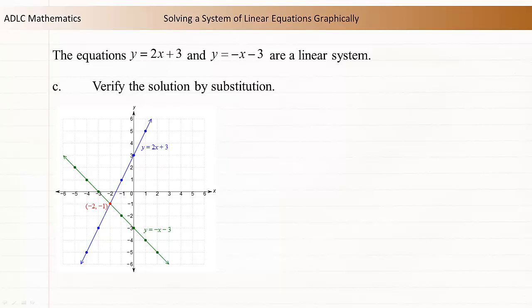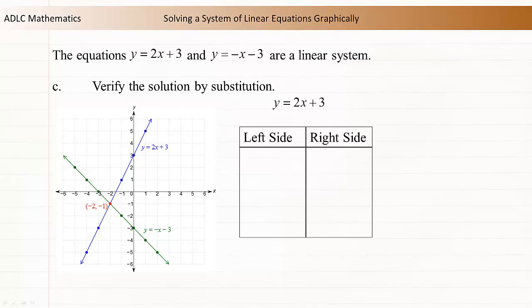Finally, let's verify that negative 2, negative 1 is a solution by checking that it satisfies both equations. Let's check y equals 2x plus 3 first. Start by entering the left side of the equation into the table. Substitute negative 1 for y. Now enter the right side of the equation into the table. Substitute negative 2 for x and simplify. 2 times negative 2 is negative 4, and negative 4 plus 3 is negative 1. The left side is equal to the right side, so negative 2, negative 1 satisfies this equation.